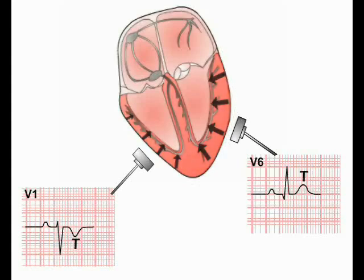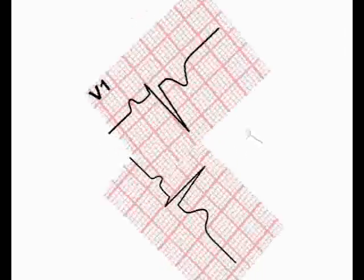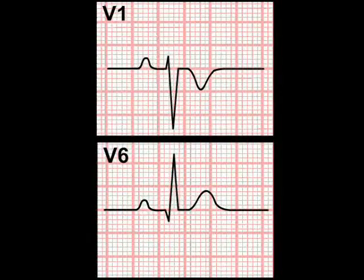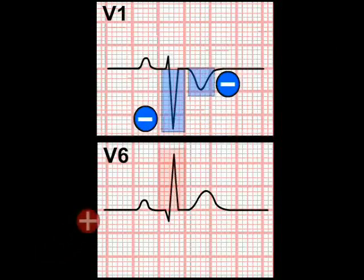The deflection produced by ventricular repolarization is termed a T-wave. Note that the T-wave has a very different morphology to the QRS complex. Cardiac repolarization spreads relatively slowly through the muscle mass outside the conducting system; hence, the T-wave is considerably longer in duration and therefore broader on the ECG paper compared to the QRS complex. The fact that repolarizing current moves through the ventricles in the opposite direction to the depolarization wave means that in leads with an overall negative QRS complex — where the negative deflection is larger than the positive deflection — the T-wave also tends to be negative, lying below the isoelectric line, while in leads with an overall positive QRS complex, the T-waves are also positive, lying above the isoelectric line.